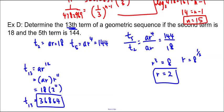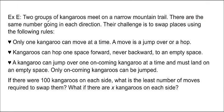I think we have one more question for you, and I'm not going to solve this question for you. I'm just going to let you think about it on your own. So why don't you try this question? Example E: two groups of kangaroos meet on a narrow mountain trail. There are the same number going in each direction. Their challenge is to swap places using the following rules. Only one kangaroo can move at a time. A move is a jump over or a hop. Kangaroos can hop one space forward, never backward, to an empty space. And a kangaroo can only jump over one oncoming kangaroo at a time, must land on an empty space. Only oncoming kangaroos can be jumped. If there were 100 kangaroos on each side, what is the least number of moves required to swap them? And what if there are X kangaroos on each side? Just a hint, it is in the geometric sequence section. Hopefully you will think about that and answer it and bring it to class. I hope you enjoyed it. Thanks for watching and I will see you soon. Bye.